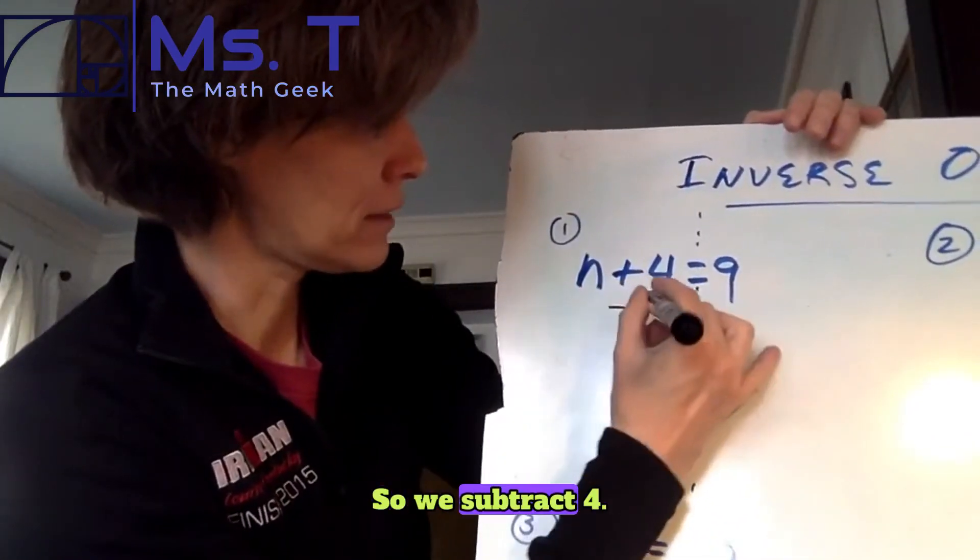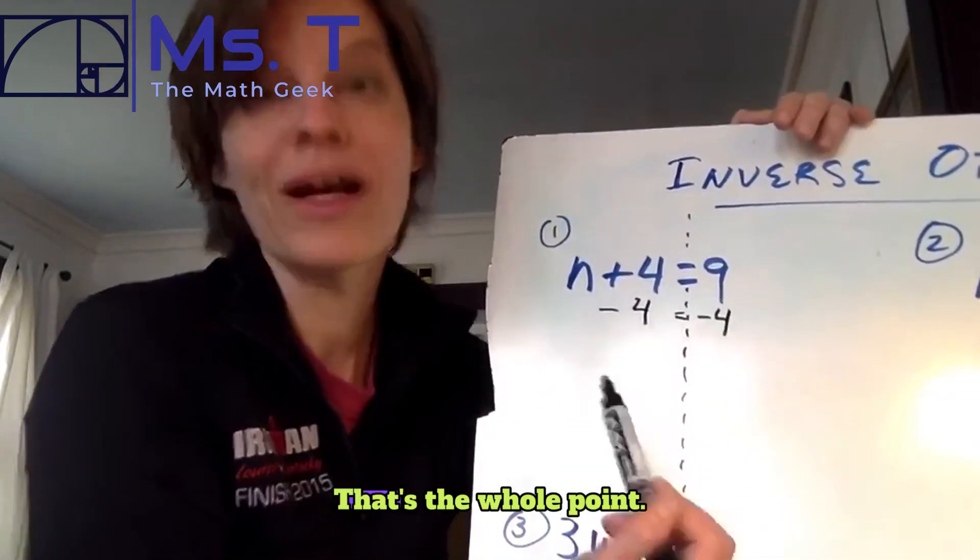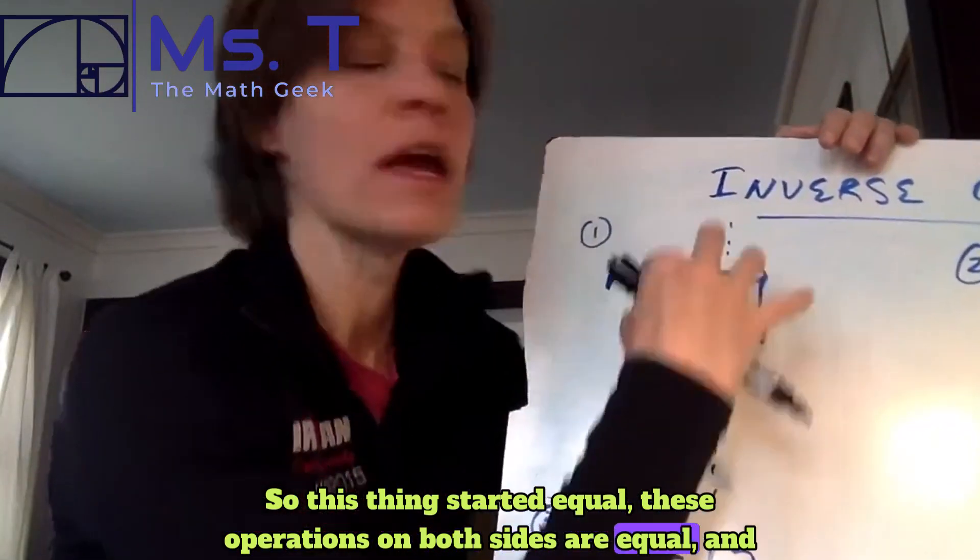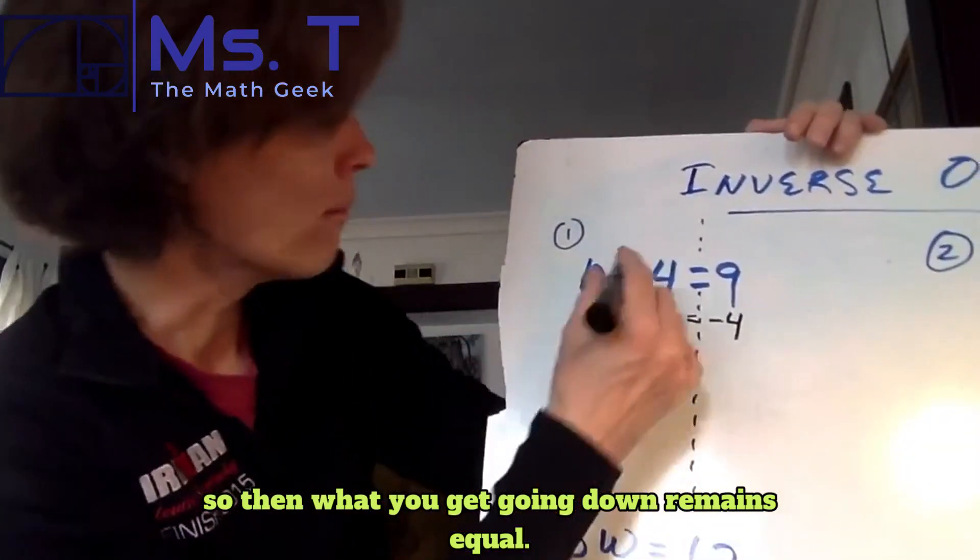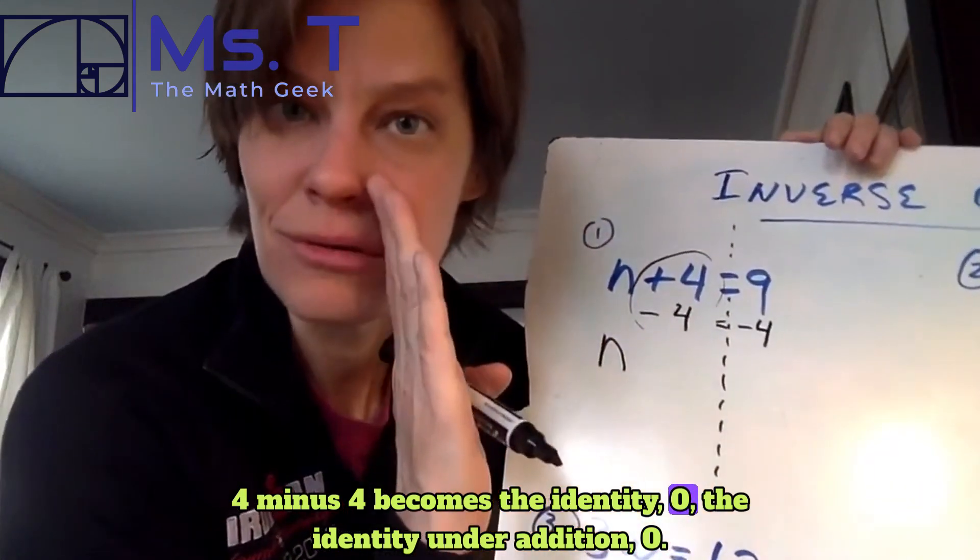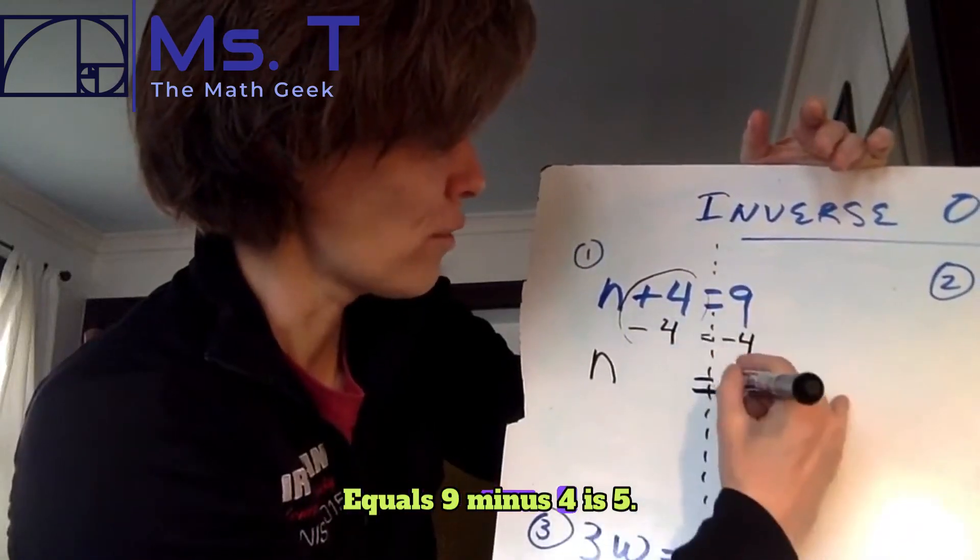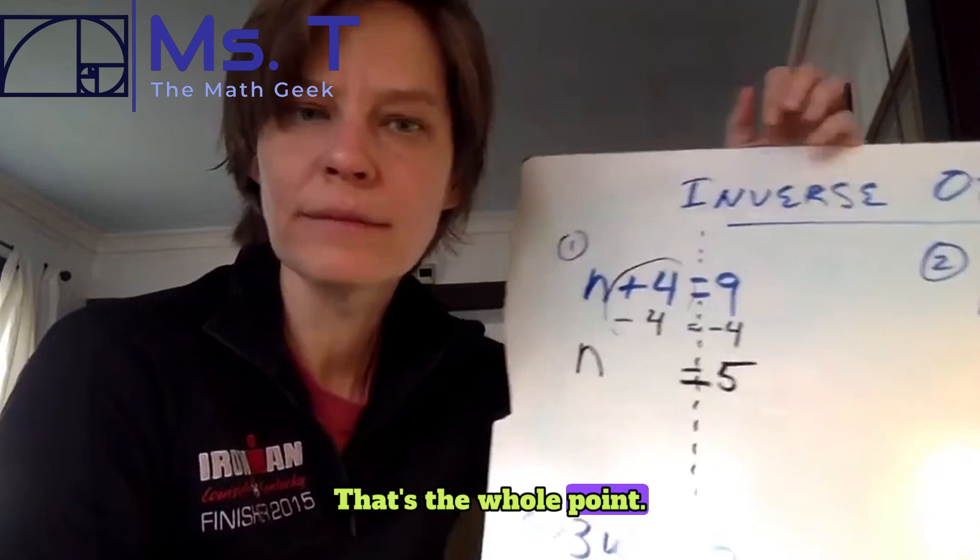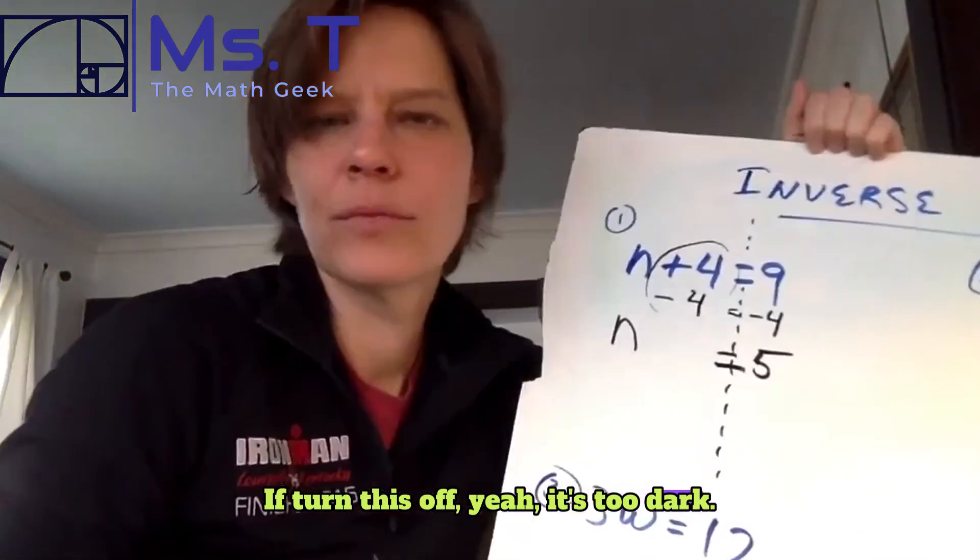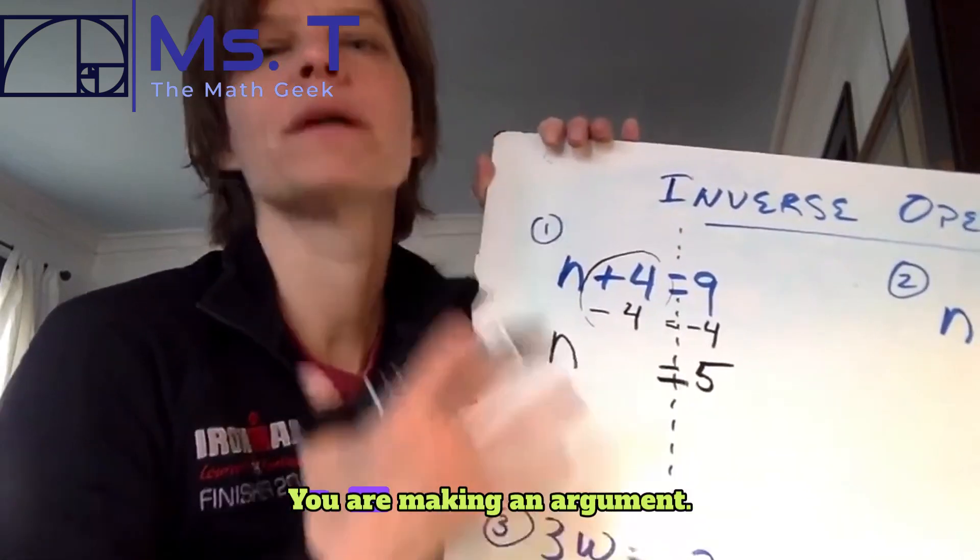Subtract it. So we subtract four. Now you'll notice even here, negative four is equal to negative four. That's the whole point. So this thing started equal. These operations on both sides are equal. And so then what you get going down remains equal. Well, over here, you have N plus four minus four becomes the identity zero, the identity under addition zero. So we don't write it. Equals nine minus four is five. That's the whole point. Equals five. Lighting problems, right? So just be clear in your presentation also. You are making an argument.